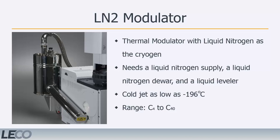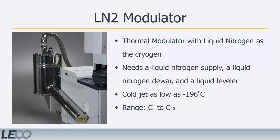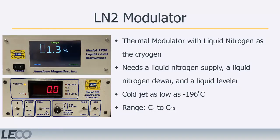The most commonly used modulator in the LECO GC×GC systems is the thermal modulator with liquid nitrogen as the cryogen. This setup employs a small liquid nitrogen dewar attached to the rear of the GC. This small dewar is usually filled with liquid nitrogen from a large, industrial-sized dewar. The filling process is controlled with a device called the liquid leveler. For the focusing portion of the modulation process, a jet of dry nitrogen gas is used. The nitrogen gas has been chilled by passing it through a coil immersed in a dewar of liquid nitrogen, or LN2.